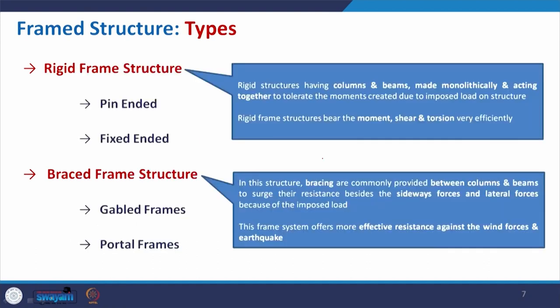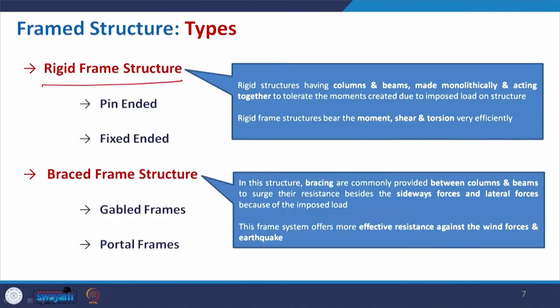Coming to the types of frame structure — based on the joint, how they are actually combined together and how they are connected to the footing — we have majorly rigid frame structure and braced frame structures. Braced frames come from the bracing we discussed earlier: in order to resist the lateral load like wind load, sometimes we connect your frame with some diagonal member.